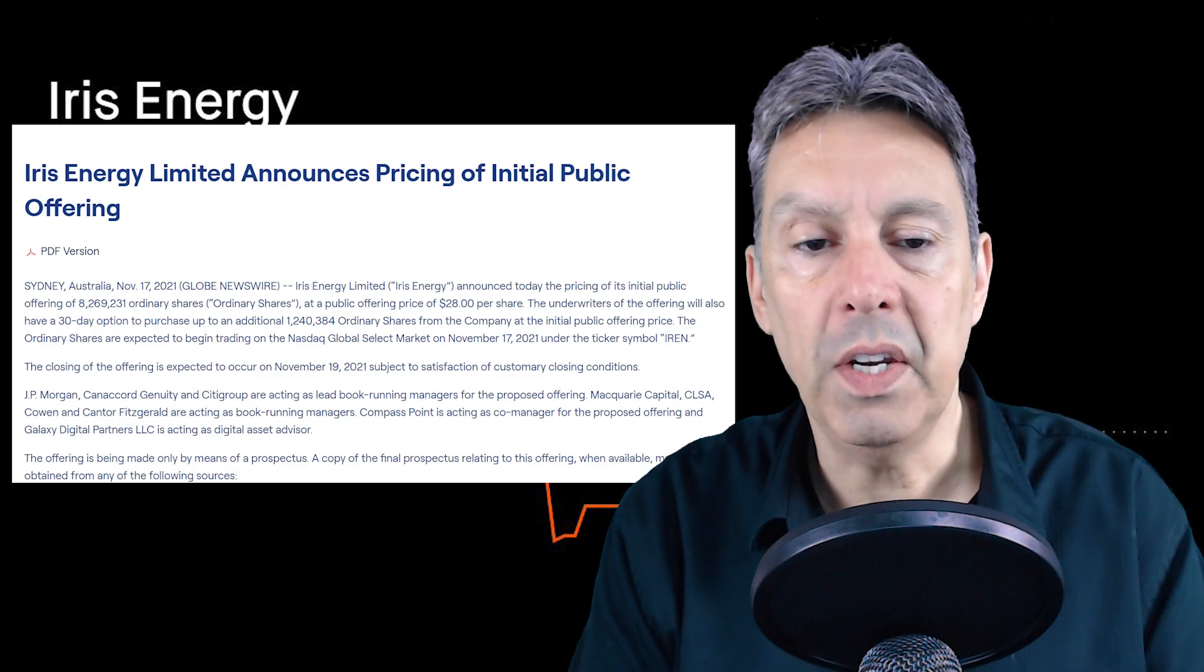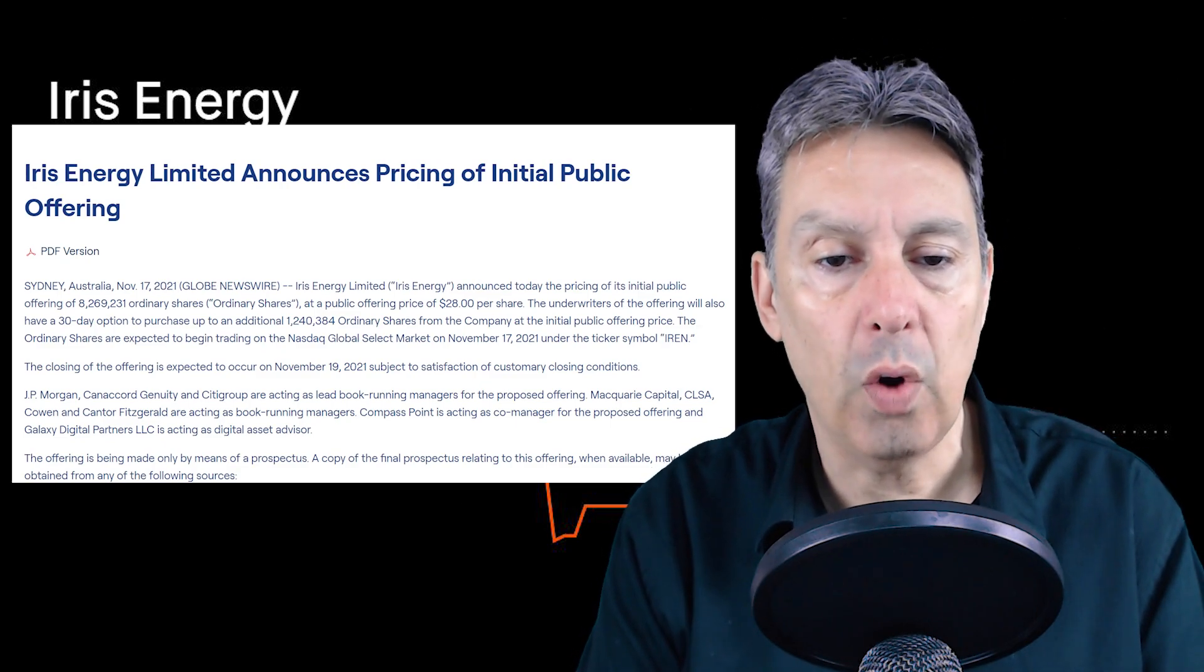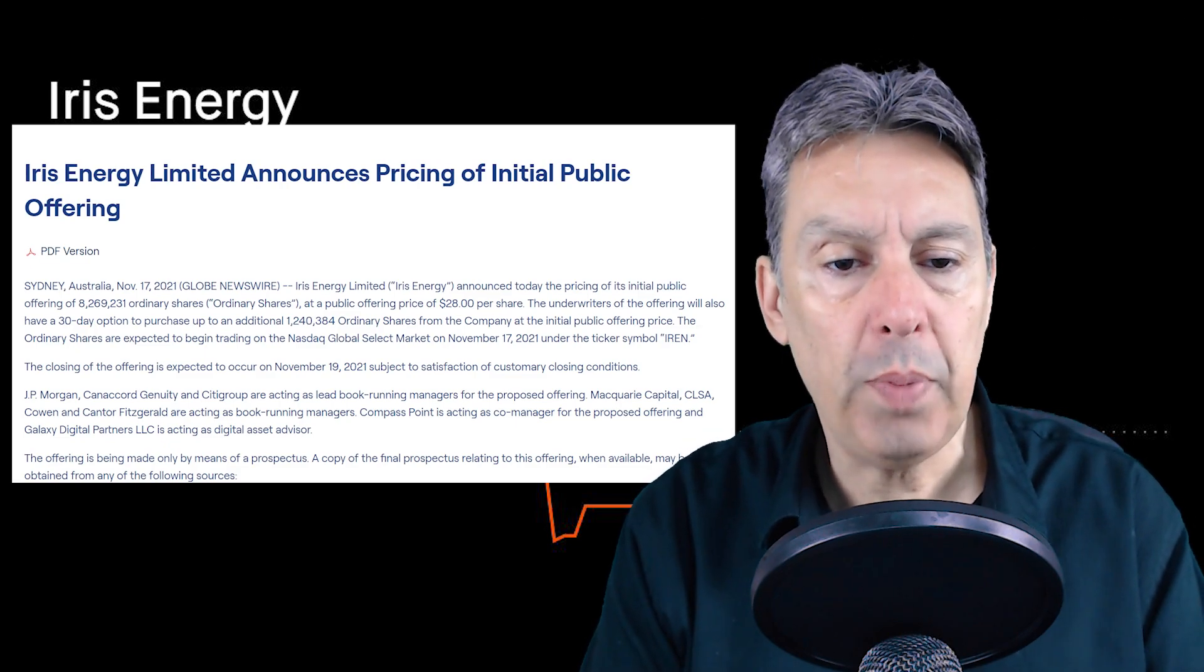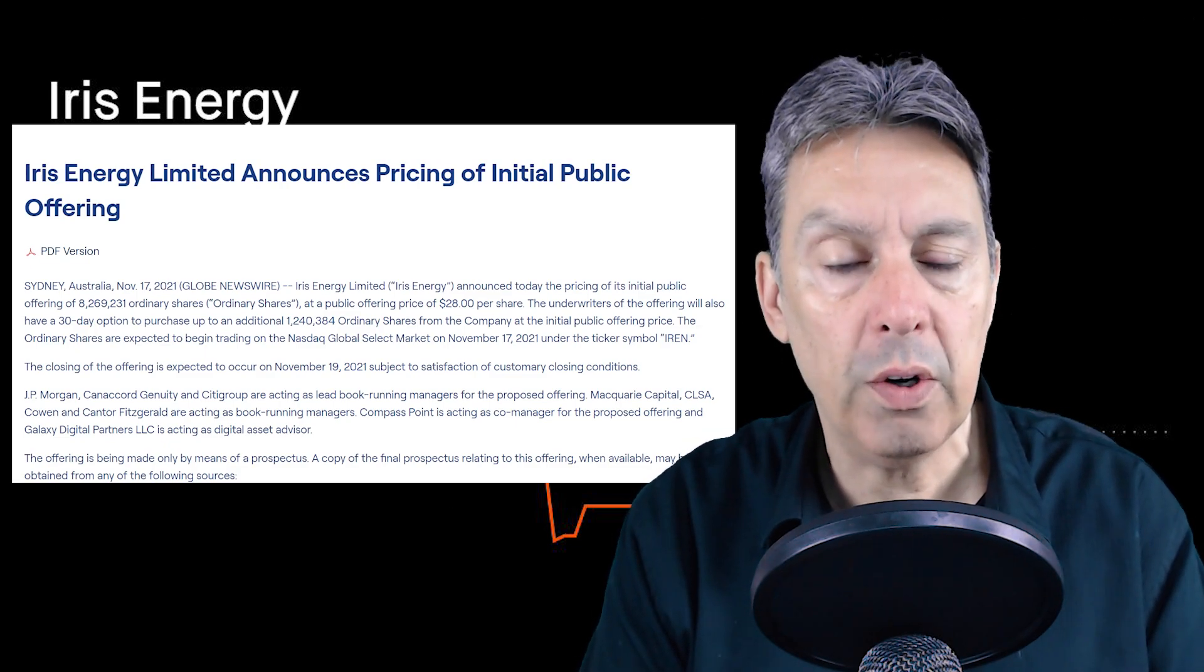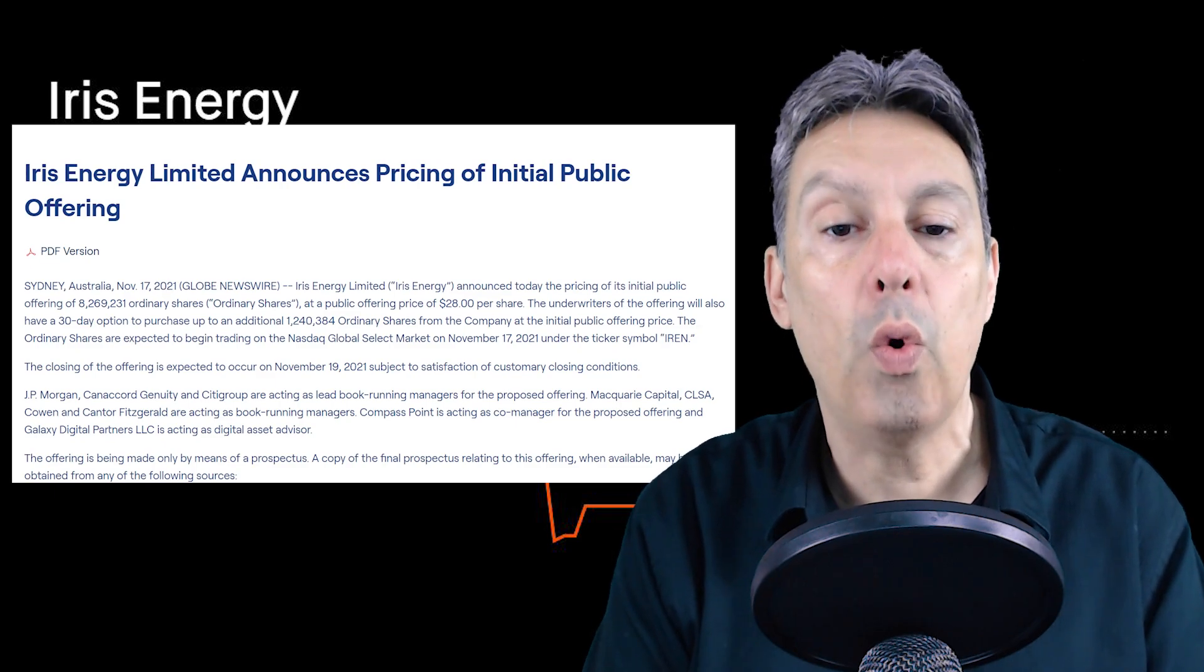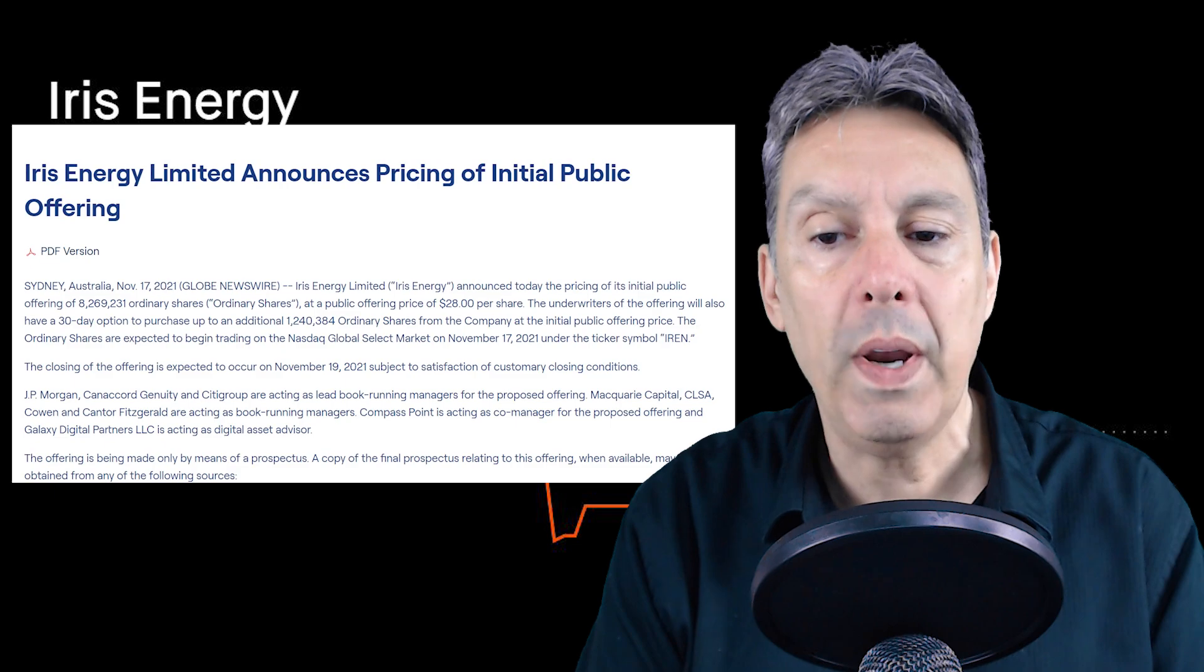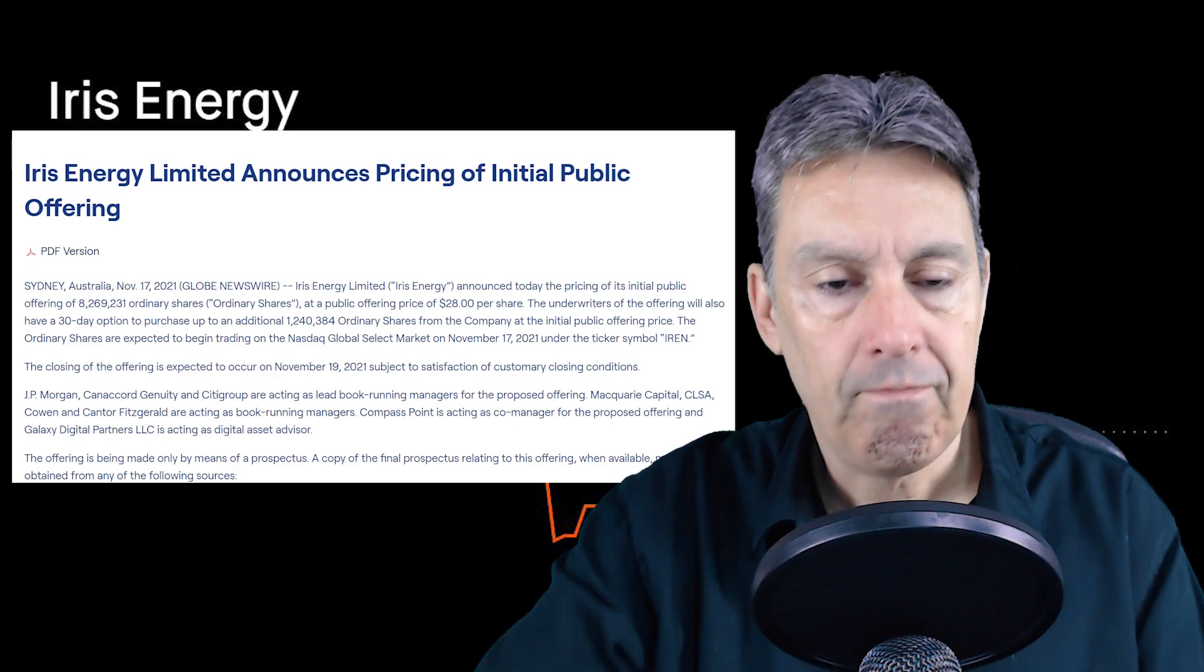Iris Energy Limited announces pricing of initial public offering. This is on November 17th, 2021. Iris announced today the pricing of its initial public offering of 8,269,231 ordinary shares at a public offering price of $28 per share.